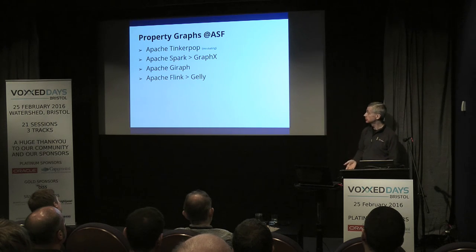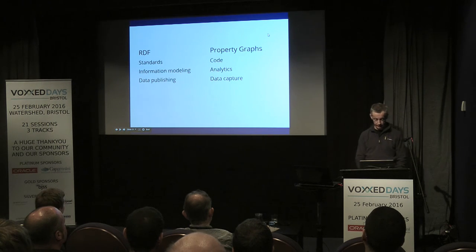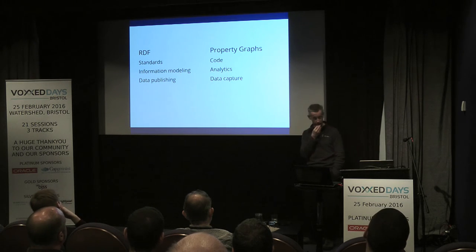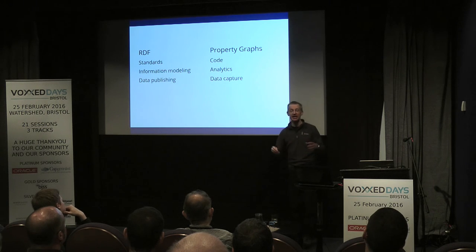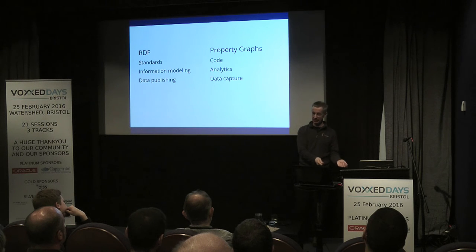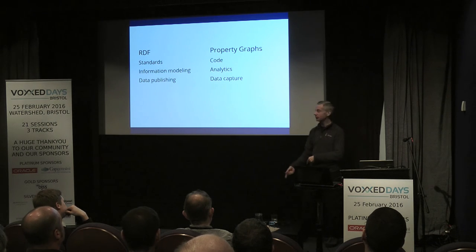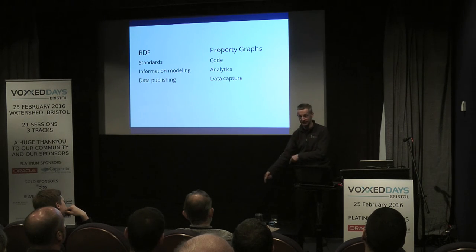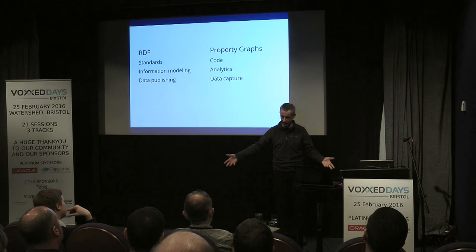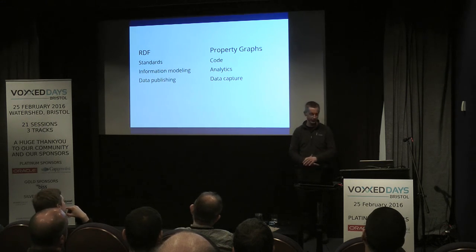Capturing the relationship between the two: the anecdotal difference is that if there's an argument about what some data means, in the RDF world you dive for the specs, find the text, and argue from there. In the property graph world you go and look at the code — 'this system does that,' 'that system does that,' and you have a discussion about which is right. These are driven by very different development processes.